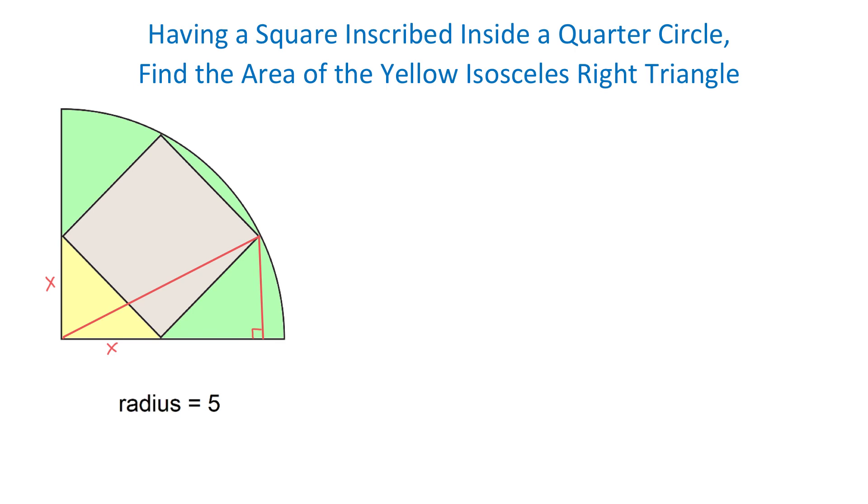The right side of this triangle is x and the bottom side is 2x, because this length is x and this is also x. The hypotenuse of this triangle is 5 because this is the radius of the circle.